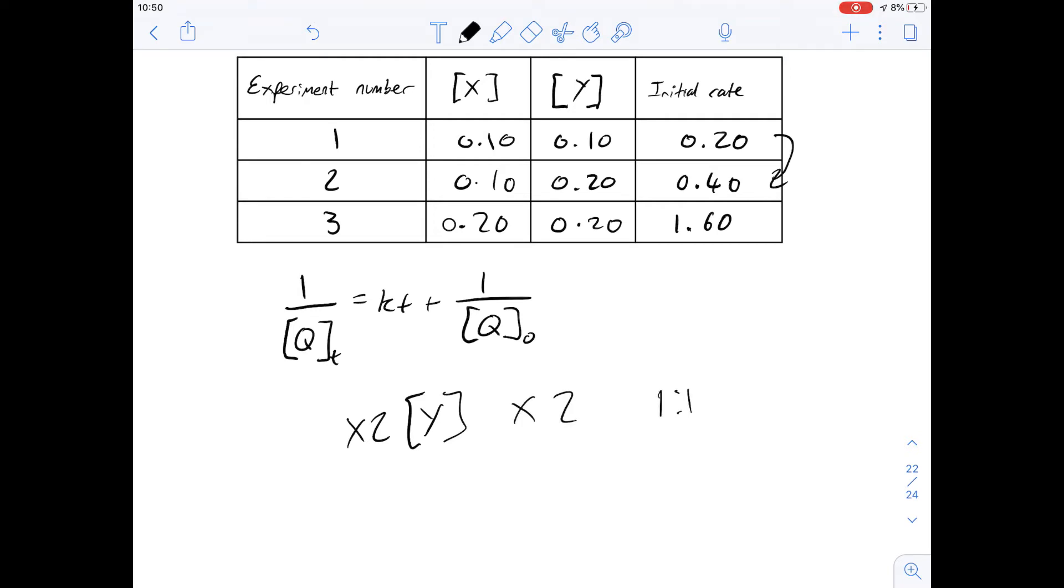Well, it multiplies by two as well. And therefore, there's a one to one ratio between the concentration and the rate. So then we can say it's going to be first order with respect to Y.